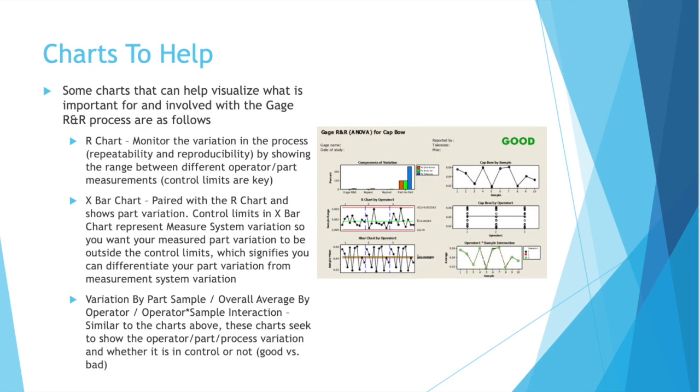And finally, what are some good charts, some good visualization tools that can help with the gauge R&R process? You have an R chart. This chart will monitor the variation in the process, repeatability, and reproducibility, by showing the range between different operator part measurements. The control limits on this chart are key. You never want to go out of control.